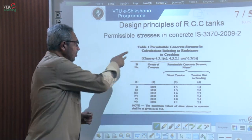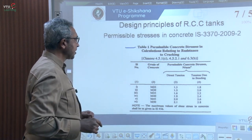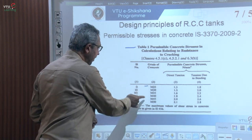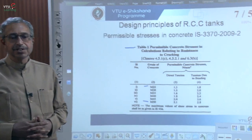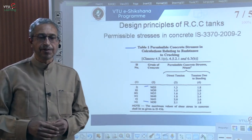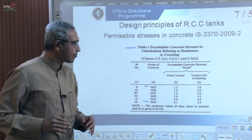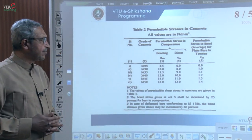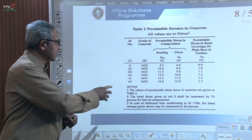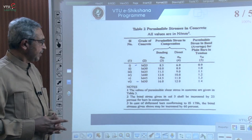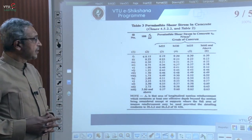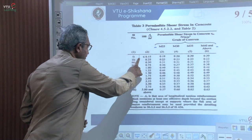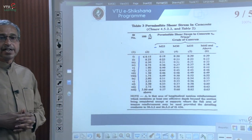Table 1 gives the permissible stresses for concrete in direct tension for different grades of concrete from M25 to M50. For water tanks, the grade of concrete must not be less than M25. Table 2 gives the permissible stress in bending compression, direct compression, and bond stress, again from M25 to M50. Table 3 gives the permissible values of shear stresses from M25 to M40 and above, for different percentages of tension steel provided in the section.